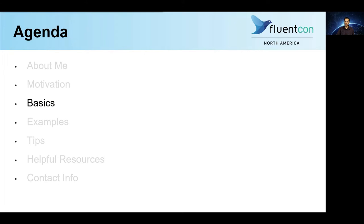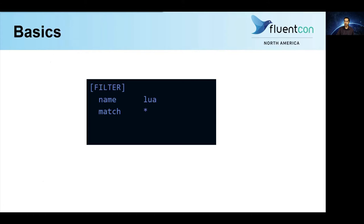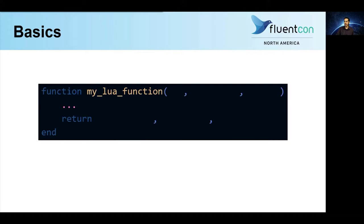Let's start by going over the basics. The Lua filter in Fluent Bit takes two main parameters: the name of the file containing your Lua program, as well as the name of the specific function that you want Fluent Bit to call on each record matched by the filter. For those of you who don't know what a record is, every input log is represented in Fluent Bit as a structured collection of key-value pairs, which we call a record. The Lua function takes three arguments, which are automatically supplied by Fluent Bit every time it calls a function on a matching record. The first argument is the Fluent Bit tag associated with the record.